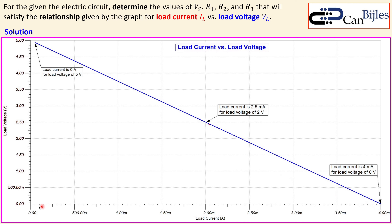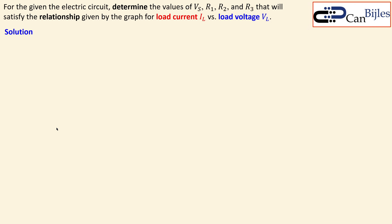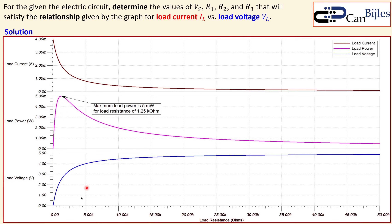The plot shows: at four milliamps the load voltage is zero, and at zero amps the load voltage is five volts. The curve also shows the maximum power point at two milliamps and 2.5 volts. The simulation confirms the circuit produces exactly the red curve from the original exercise — including the correct behavior in between the endpoints.